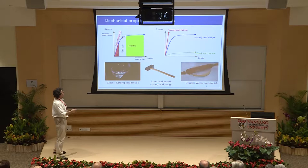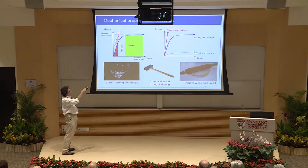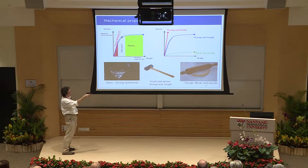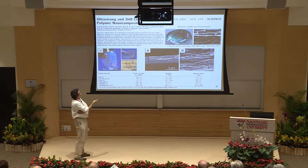In classic material science we have a stress-strain diagram with elastic deformation, a yield point, and then plastic behavior. Materials like glass are strong and brittle (red), steel and wood are strong and tough (blue), and dough is weak and ductile. A Science paper by Nik Kotov demonstrated layer-by-layer deposition — I think this was 2007.